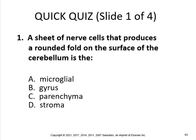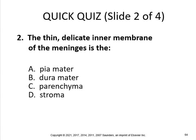What's a sheet of nerve cells that produces a rounded fold or bump on the surface of the cerebellum? That's the gyrus. What's the thin, delicate inner membrane of the meninges? That's pia mater.